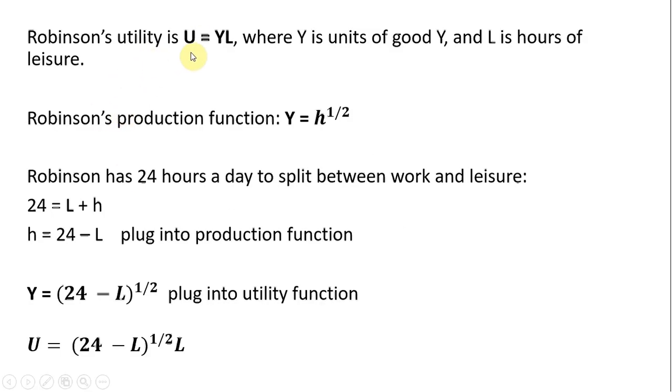So here's Robinson's utility function, where Y is units of good Y and L is hours of leisure. Robinson can produce good Y according to this production function,